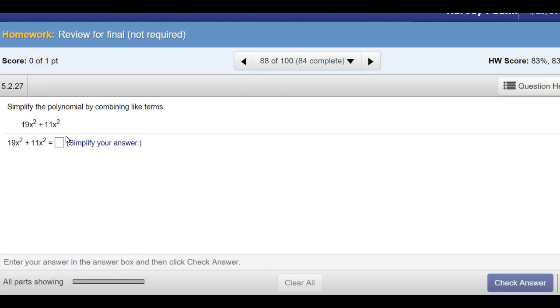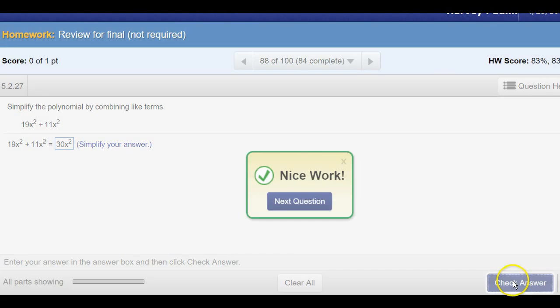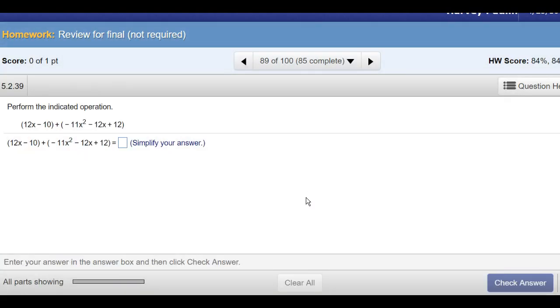Here we want to combine like terms. Now, we can do simple ones horizontally. But we said a good way to do it and develop a practice is to do it vertically. Now, when we're adding like terms, the variable part doesn't change. That's just going to be x squared here. And this becomes 30, 30 x squared.